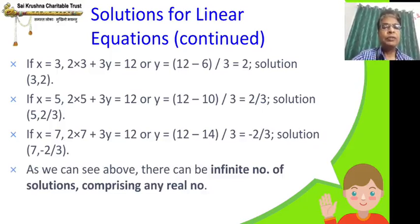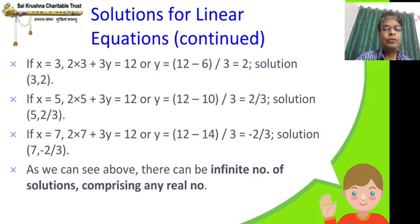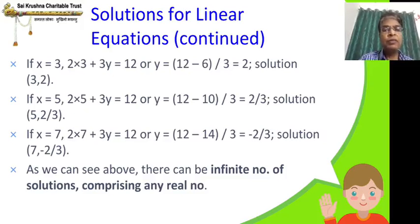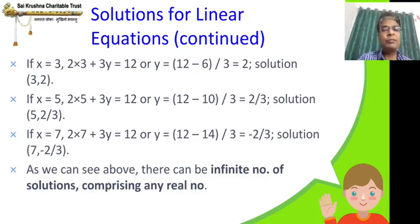As we can see, there can be an infinite number of solutions comprising any real number. You can keep on assuming any value for x or any value for y. If you assume a value for x, you will get a solution for y; if you assume a value for y, you will get a solution for x. Like this, you will have an innumerable, uncountable number of solutions.